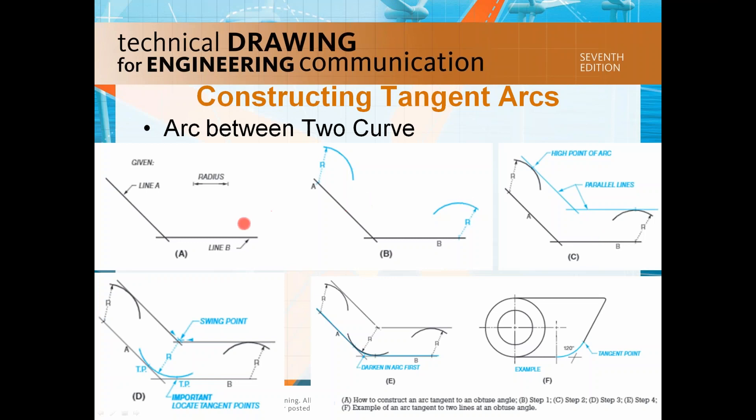As you can see from this presentation slide, an obtuse angle between angle A and B and a required radius follow the same procedure as outlined in the two preceding examples. Set the compass at the required radius and out of the way swing a radius from line A.